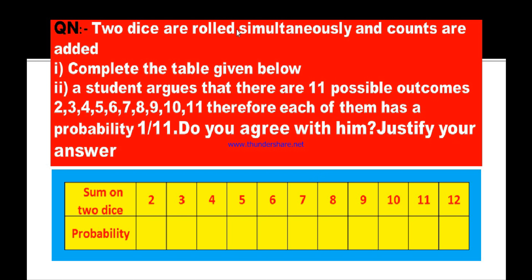Two dice are rolled simultaneously — simultaneously means at the same time. Two dice are thrown out and counts, meaning scores, are added. Complete the table given below; here is the table and we have to fill up these columns.